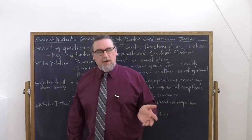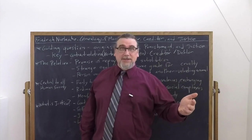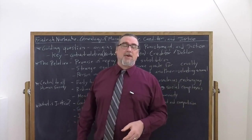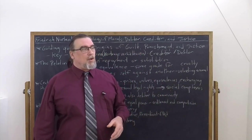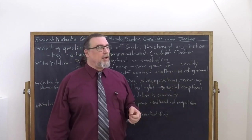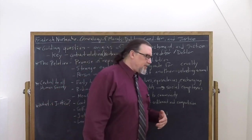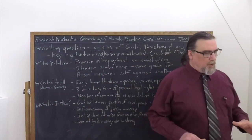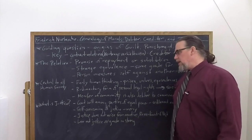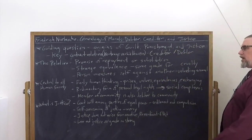He tells us that the eye was now focused on this perspective and with that blunt consistency characteristic of the thinking of primitive mankind, one arrived at the great generalization. Everything has its price. All things can be paid for. That oldest and naivest moral canon of justice, the beginning of all good naturedness, all fairness, all goodwill, that things can be exchanged for other things. An eye for an eye, a tooth for a tooth is actually a fairly complex expression of this, because it could be an eye for a blow. It could be whatever you want.